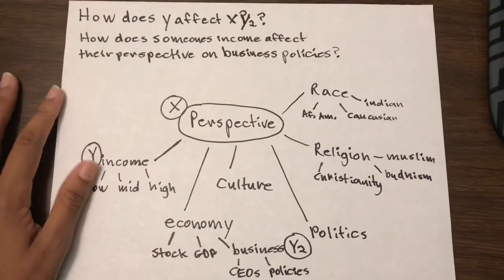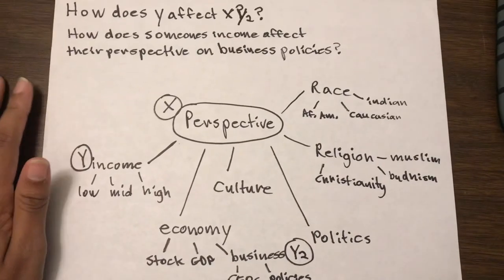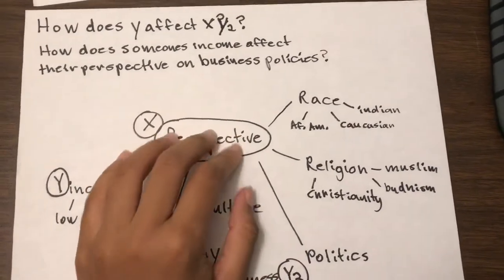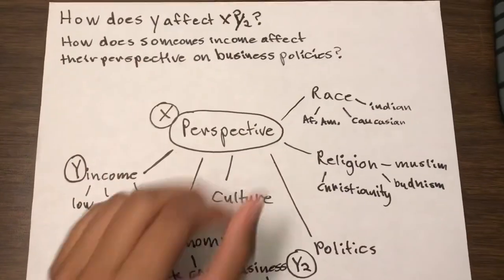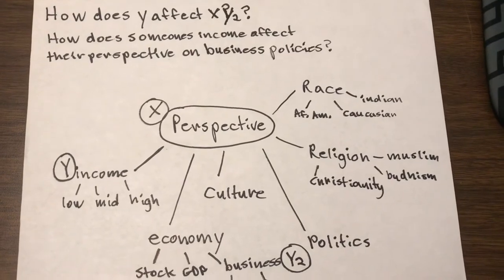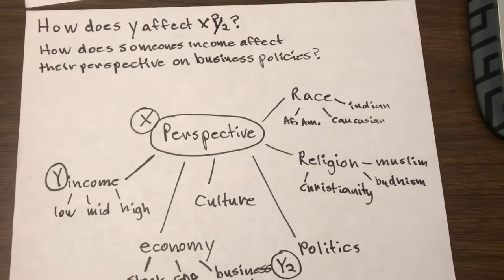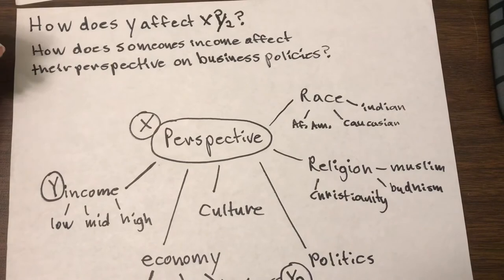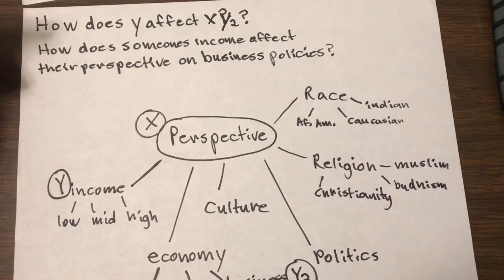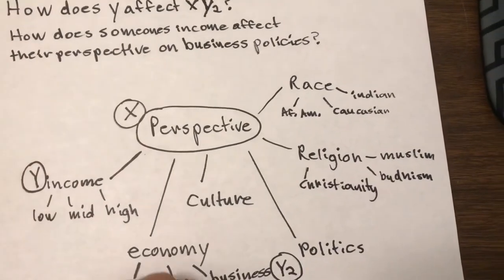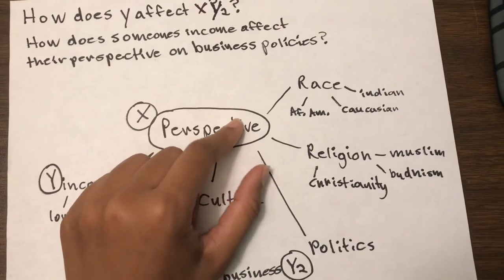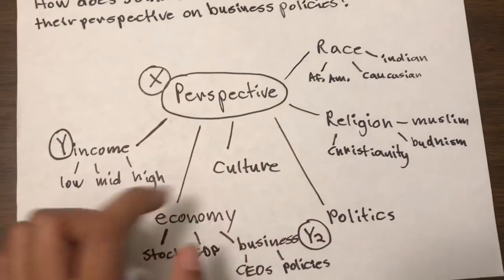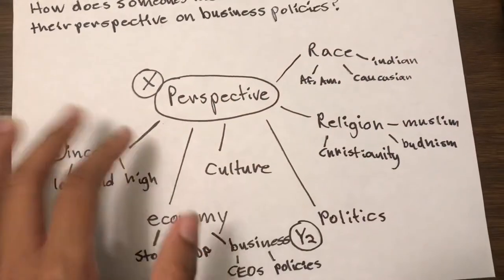All right. On the last example, we're going to do perspective. Perspective meaning your view on something, how you see something — your beliefs as a combination of experience and other things that are unique to you or a group of people. So we have perspective. How does perspective and race go together? How does perspective and religion, perspective and culture, perspective and economy, politics, income? These are just a few examples.